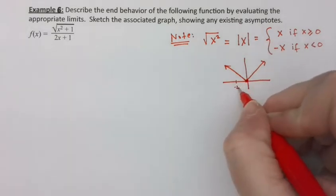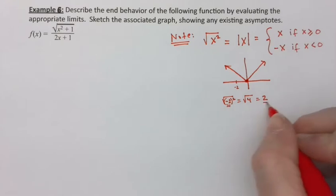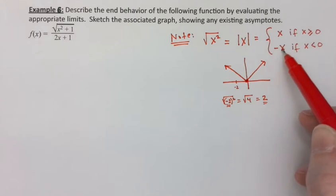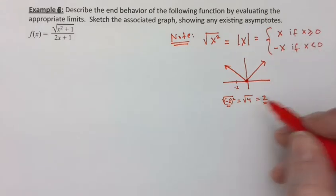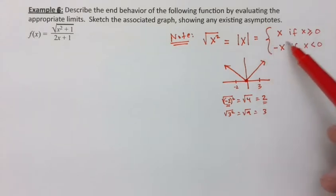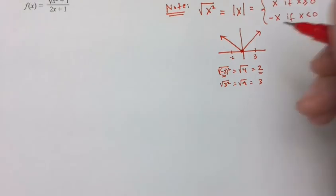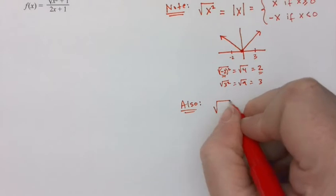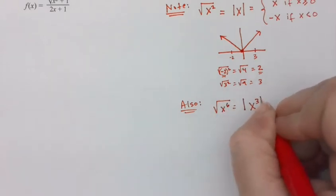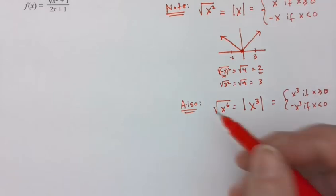For example, if x is negative 2, then the square root of (negative 2) squared is the square root of 4, which is 2 — I took something negative and turned it positive by placing a negative in front of it. Negative negative 2 makes positive 2. If it's already positive, like 3, there's no problem: the square root of 3 squared is the square root of 9, which is 3. This works for any even root — for example, the square root of x to the sixth equals the absolute value of x cubed, which is x³ if x ≥ 0, and negative x³ if x < 0.